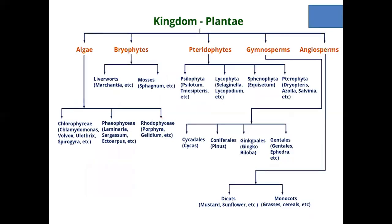This is the Plant Kingdom with its divisions and classes. The hierarchy is: Kingdom → Division → Classes. This Plant Kingdom has five divisions: Algae, Bryophyta, Pteridophyta, Gymnosperm, and Angiosperm.